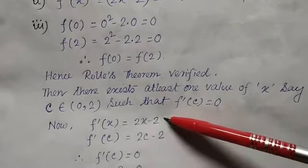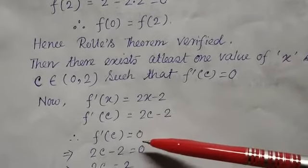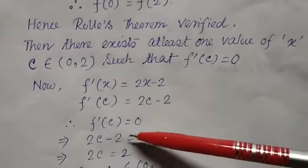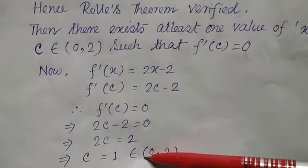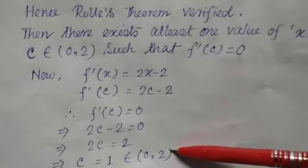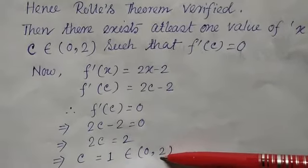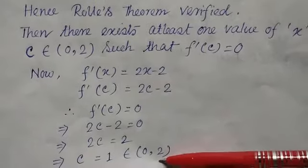Now, f'(x) = 2x - 2. So f'(c) = 2c - 2. f'(c) = 0 means 2c - 2 = 0. So after simplification, c = 1. You got the value of c which belongs to the open interval (0, 2). So up to this, complete answer - you have to find the value of c. So c done, that means sum's completed.